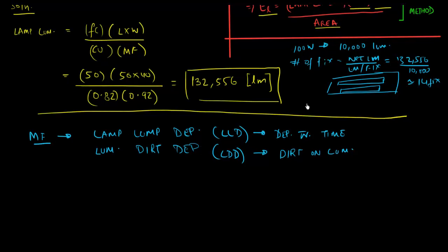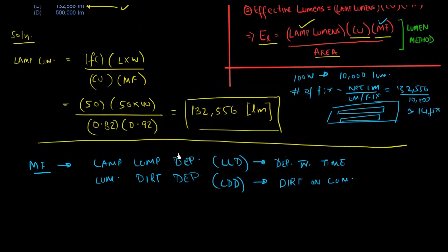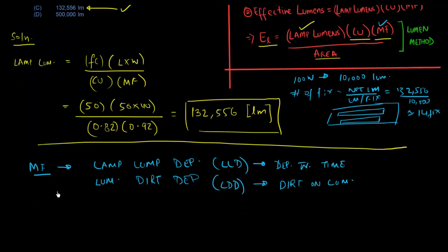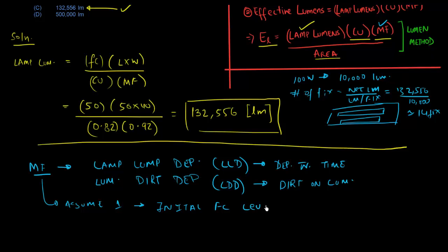Coming back to the maintenance factor: it generally accounts for lamp lumen depreciation as well as luminaire dirt depreciation. In this problem we were given the maintenance factor. If you're not given it, you can assume it to be 1, in which case you get what's called the initial foot candle level as opposed to the maintained foot candle level. If given in the problem, use it; if not, take it as 1.